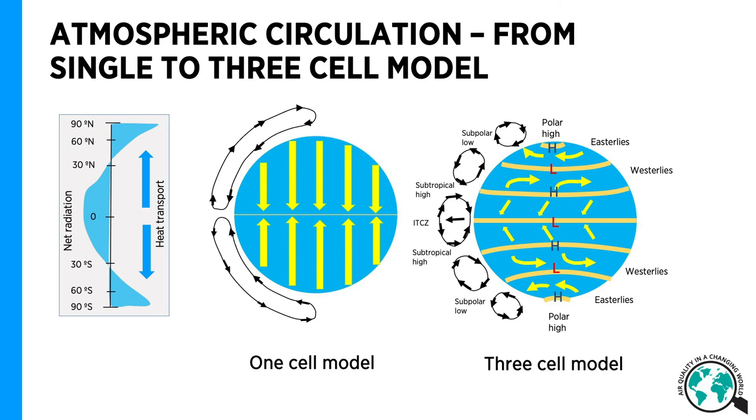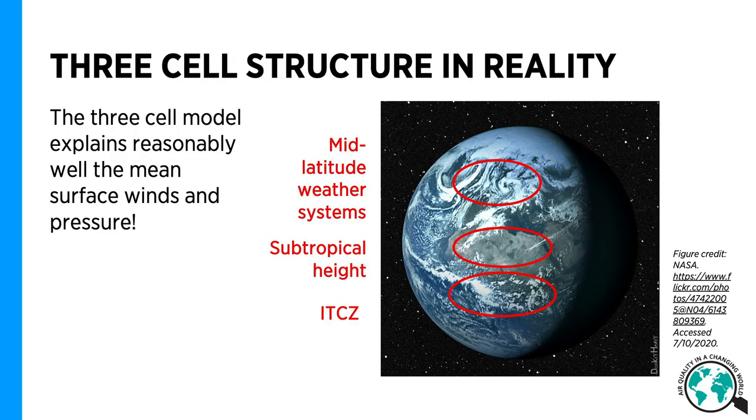So in reality, the atmosphere of the Earth works not as a single cell model, but as a three cell model that is illustrated here. And this is how the three cell model looks in reality. Overall, the three cell model explains reasonably well the mean surface winds and pressure.